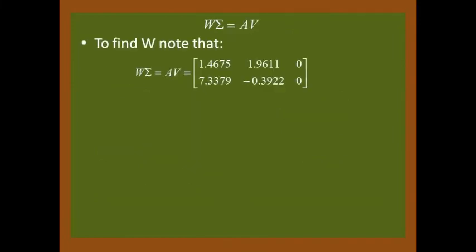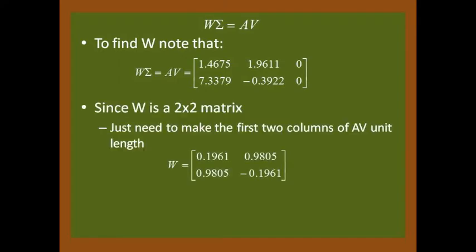To find W, note that W sigma is equal to A V. Since you know W has to be a 2 by 2 matrix, all we have to do is to normalize the first two vectors of A V. Confirm this by multiplying out, and we get the same answer.